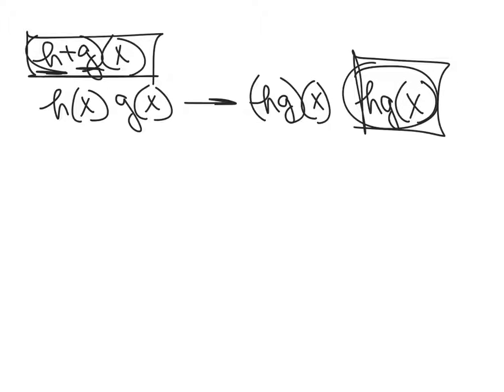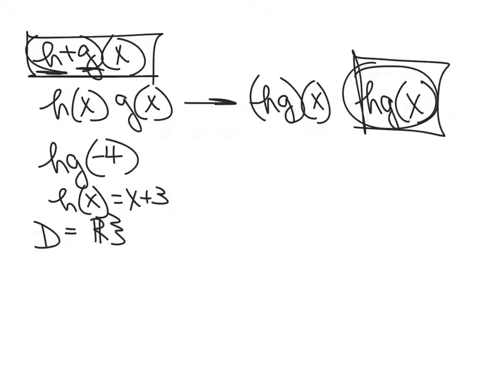Let's jump right into 102.3 example, and they're giving me hg of negative 4. They're telling me that h of x, so they're giving me the h equation, and they're telling me that it's x plus 3. They're also telling me the domain of that is the set of real numbers.